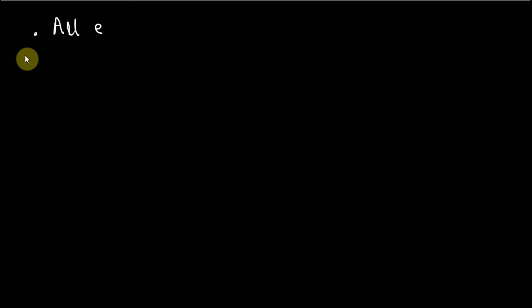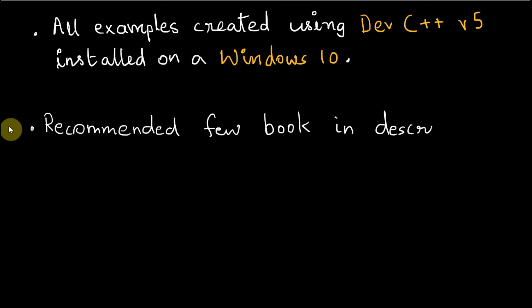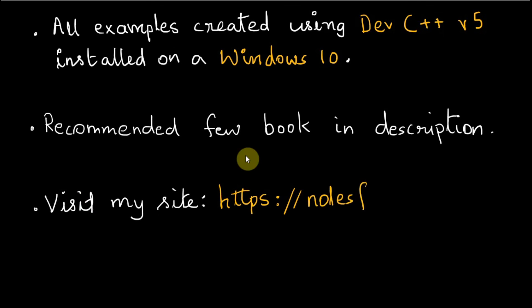All examples in this tutorial are created using Dev C++ version 5 compiler installed on a Windows 10 computer. I have suggested a few books in the description box in case you are interested in reading and working examples on your own. Plus, you can visit my website and do the practice programs from there.